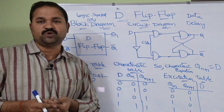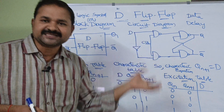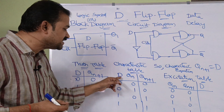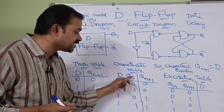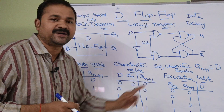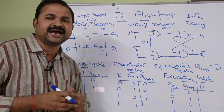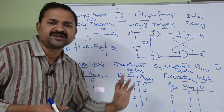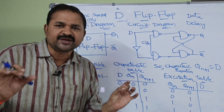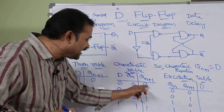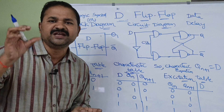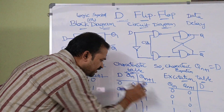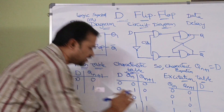Now let us see about the characteristic table. The characteristic table accepts the input and present state output as inputs, and produces the next state output. Here D is the input, Q(N) is the present state output, and Q(N+1) is the next state output. We have two inputs D and Q(N), giving four combinations: 00, 01, 10, 11. Irrespective of Q(N), the output Q(N+1) equals D only, since the D flip-flop is used for storing data. So the outputs are 0, 0, 1, 1.